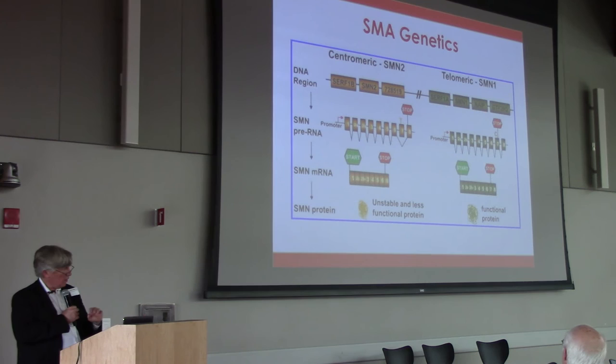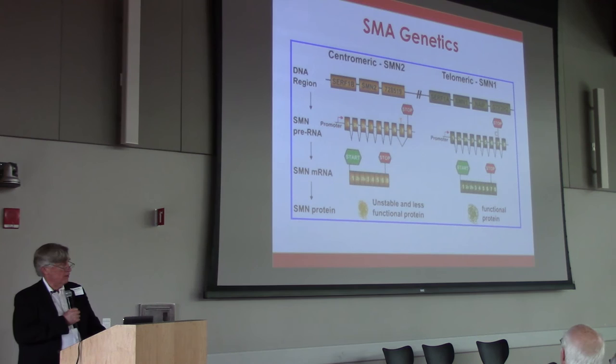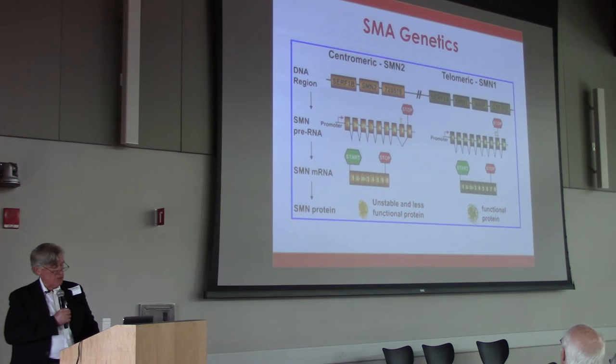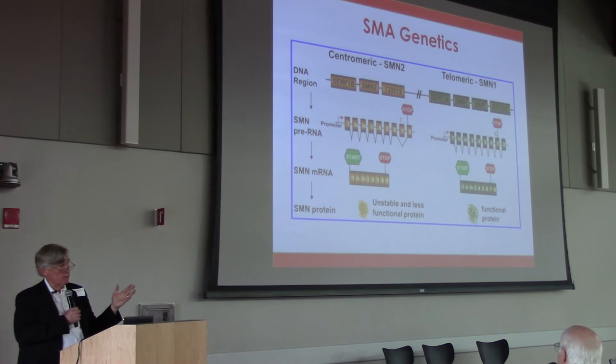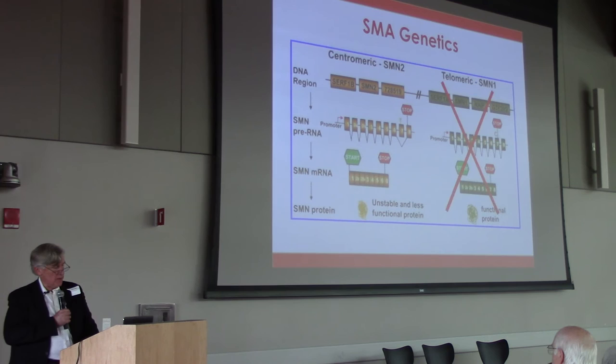SMA is a neuropathy — the nerve cell body is in the spinal cord, the nerve goes out to muscle, and because of a genetic change the nerve cells die and ultimately the patient dies. It's a recessively inherited disorder: mom is a carrier, dad is a carrier, they have no idea. One out of four of their kids is born looking normal, and then by age three to four months they start to lose strength.